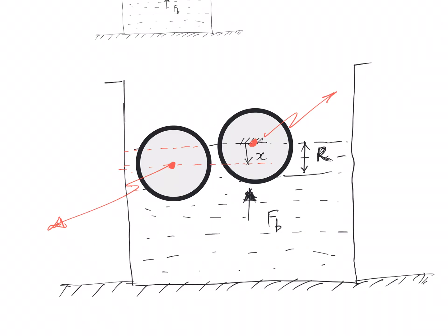From the equilibrium condition, I'm giving the system an initial disturbance by displacing it downward. Now we are asked to compute the natural frequency.